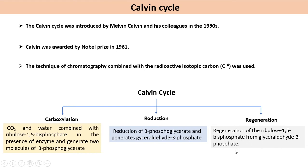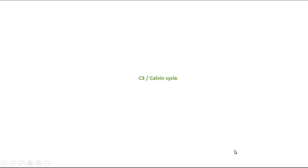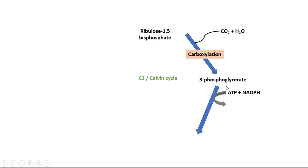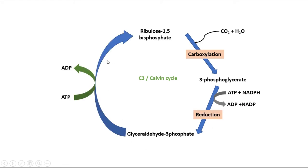Brief introduction of C3 or Calvin cycle: Ribulose-1,5-bisphosphate combines with CO2 and water and generates 3-phosphoglycerate. The Calvin cycle is also known as the C3 cycle because the first product of this cycle is 3-phosphoglycerate, which is a 3-carbon molecule. 3-phosphoglycerate is reduced to produce glyceraldehyde-3-phosphate, which is involved in the regeneration of ribulose-1,5-bisphosphate.